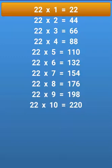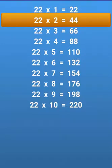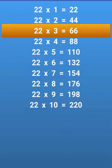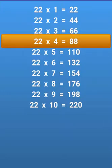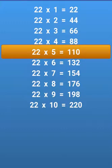22 times 1 equals 22, 22 times 2 equals 44, 22 times 3 equals 66, 22 times 4 equals 88, 22 times 5 equals 110.